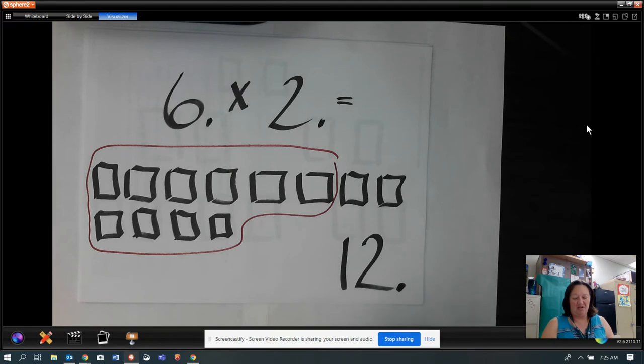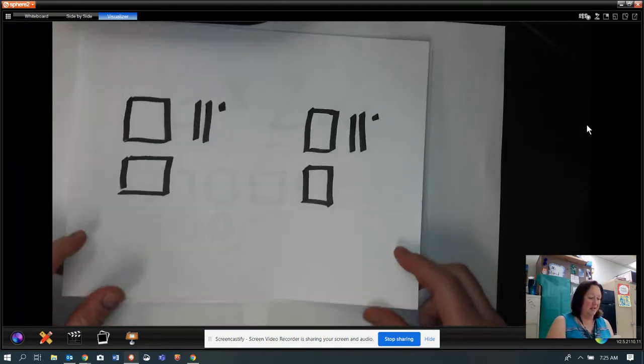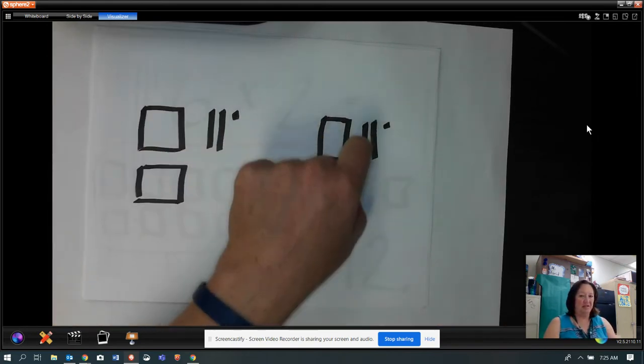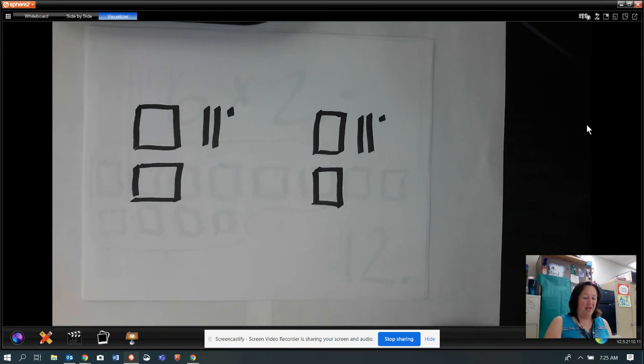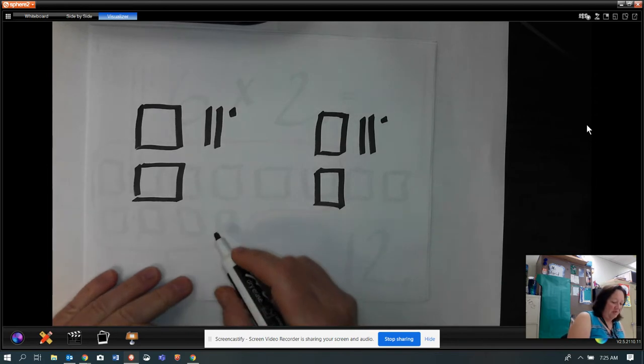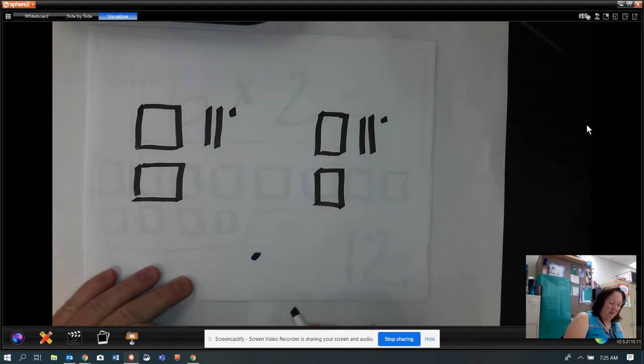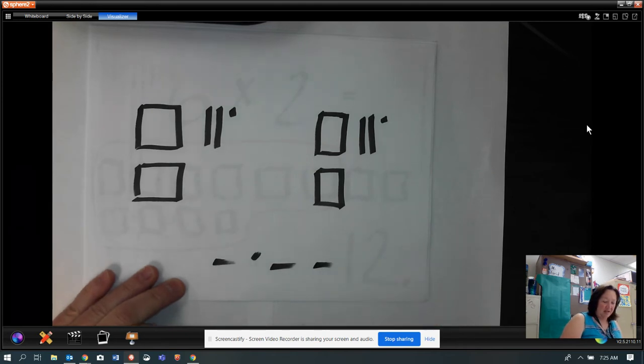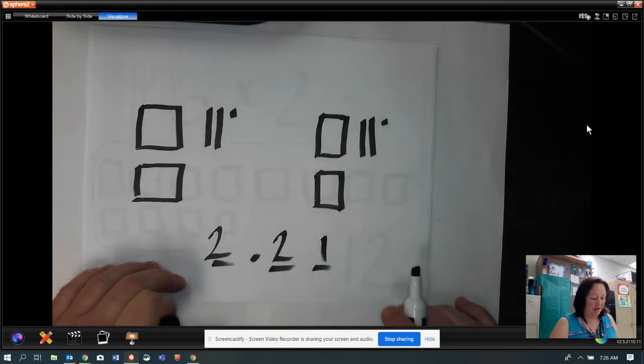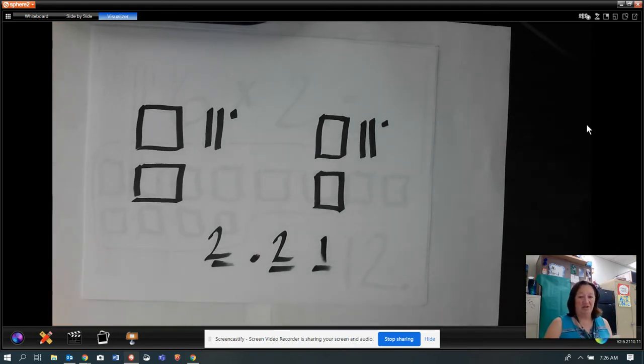Now let's start looking with decimals. If you look at this one, this is two groups, and in each group we have two whole, two tenths, and one hundredths. So here's my whole, my tenths, and my hundredths. I have two whole, two tenths, and one hundredths. So it's two groups of two and 21 hundredths.